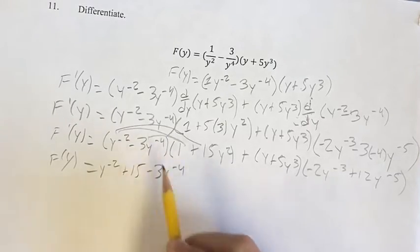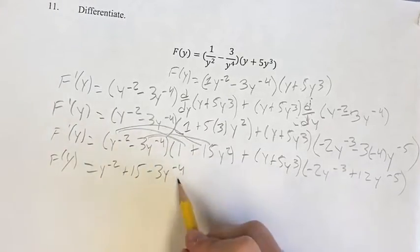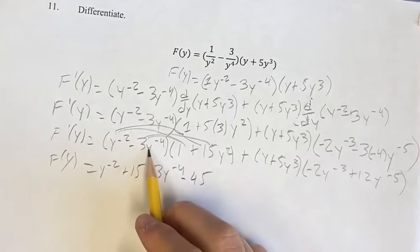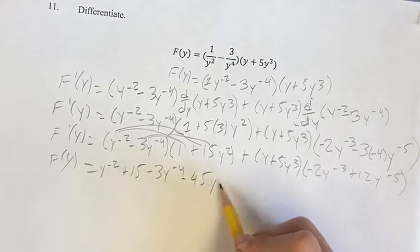Minus 3y to the negative 4 minus 3 times 15 is minus 45y to the negative 4 plus 2 is y to the negative 2.